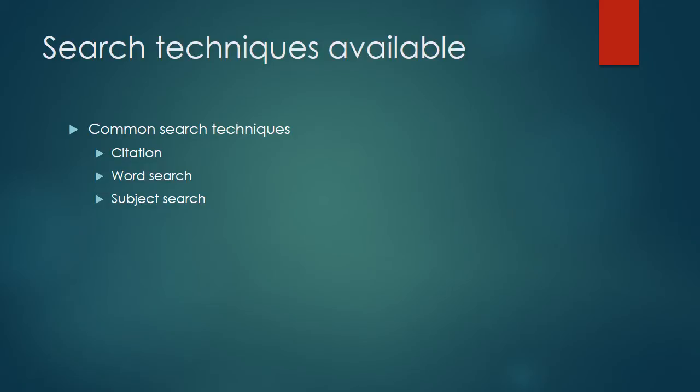Using citation retrieval is almost like using a secondary source in terms of technique — if you go to a secondary source like Restatements, you're guided to more information. When you type in the citation of a case, the court will have cited previously decided cases in reaching its analysis, so you're looking at precedent about the same topic.